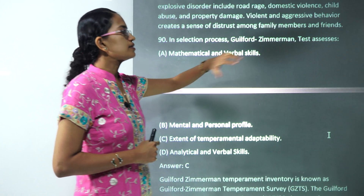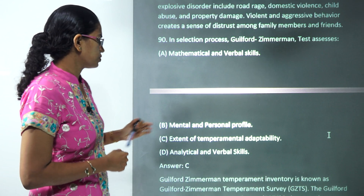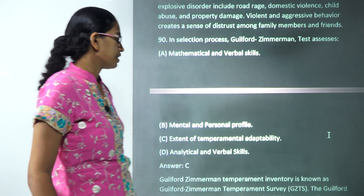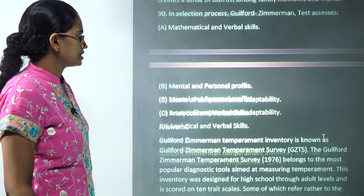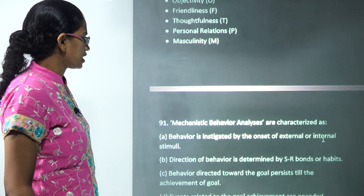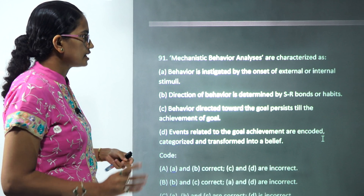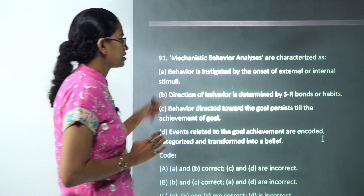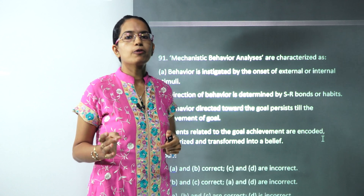The next question states that the Guilford-Zimmerman scale measures temperamental adaptability — that's the correct answer. It is a temperament scale, and this was a direct question that was asked.